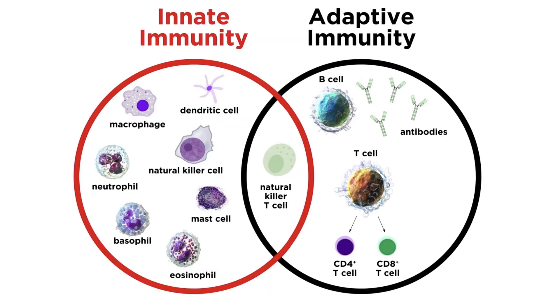In the previous tutorial, we began looking at the various types of innate immune cells. With macrophages covered, let's move on to dendritic cells, abbreviated as DCs.